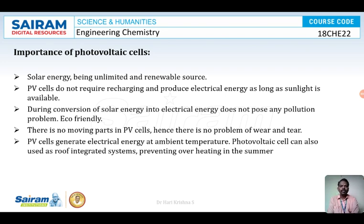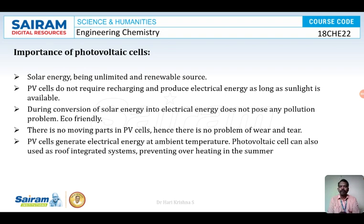PV cells are the main source of power in spacecraft and satellites. Above the atmosphere where there is no electricity and no batteries can be carried, sunlight shines 24/7, so spacecraft and satellites completely depend on PV cells. Almost every signal in Bangalore — railway signals, road signals, street lights — everything is powered by solar panels.